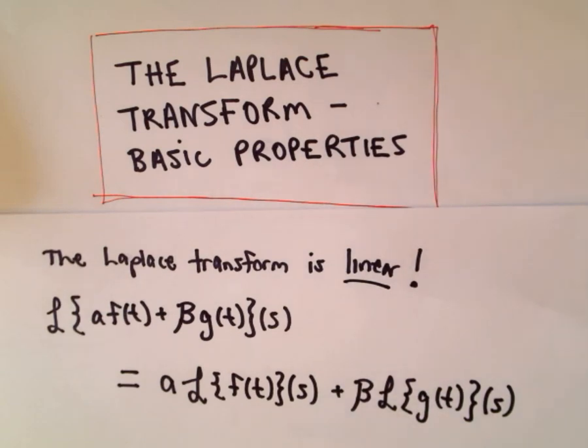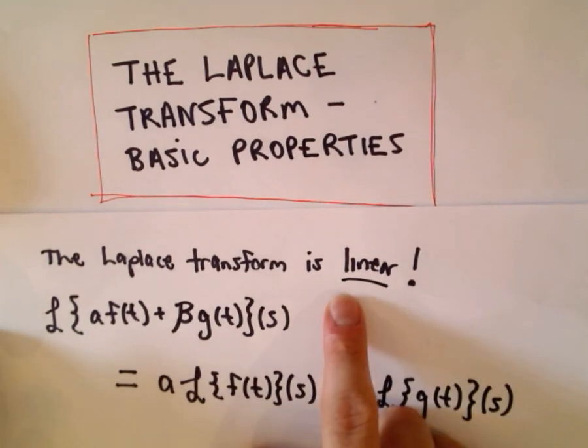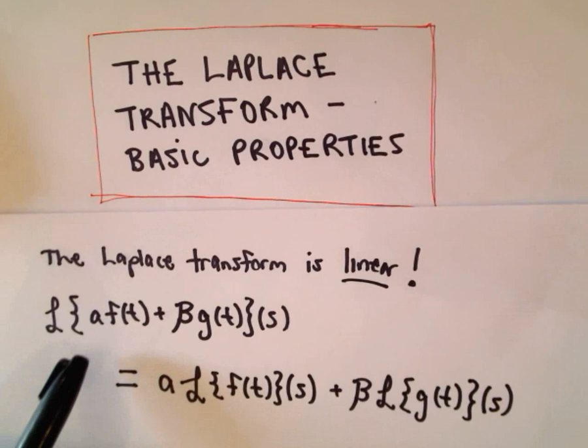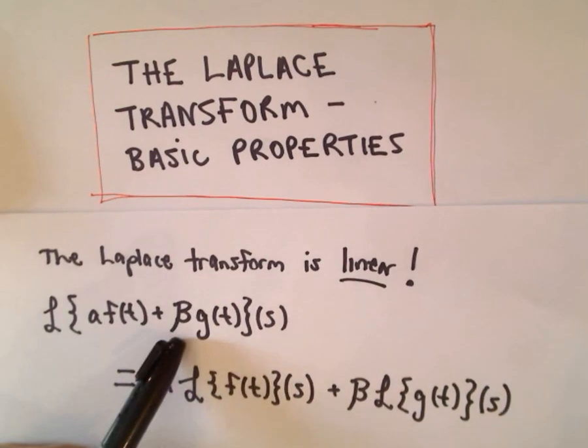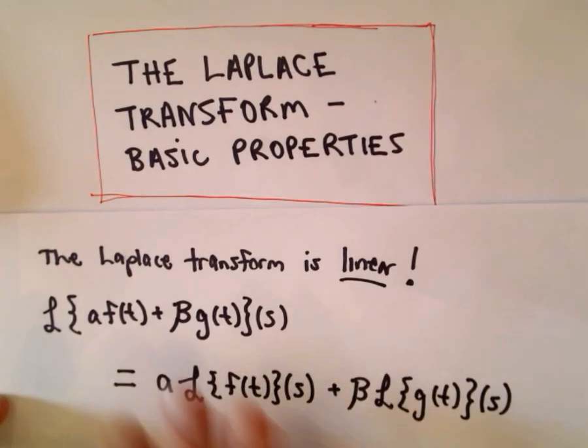Alright, so one more nice property of the Laplace transform that makes everything nice is that the Laplace transform is linear. So again, suppose that a and b are just constants. F and g again are piecewise continuous functions of exponential order, so still satisfying those conditions that we had earlier.